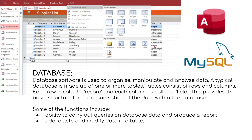Moving on to database software, which may not be familiar to a lot of people, but database software is used to organize, manipulate, and analyze data — usually large amounts of data. A typical database is made up of one or more tables. Tables consist of rows and columns, a little bit like a spreadsheet. Each row is called a record and each column is called a field. This provides a basic structure for the organization of data within a database. Some of the functions include the ability to carry out queries on database data and produce a report.